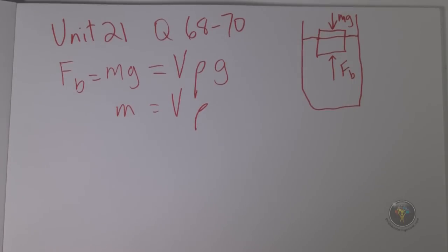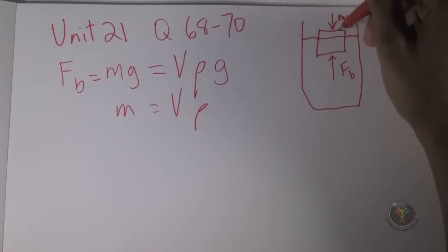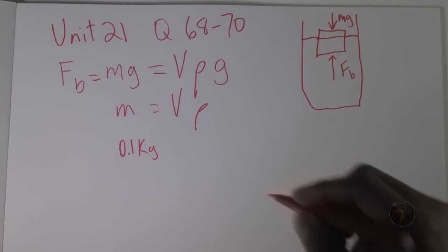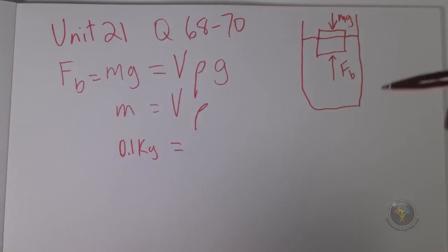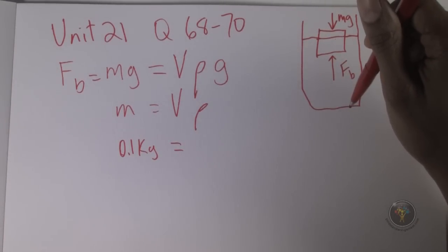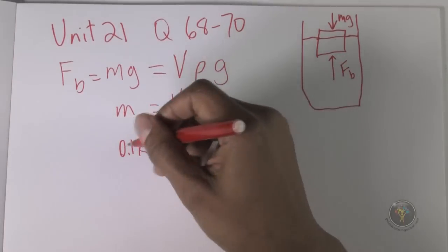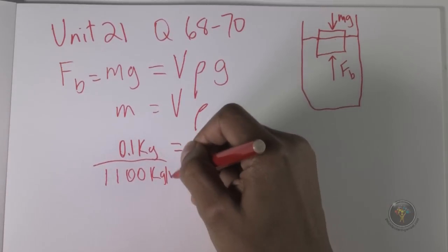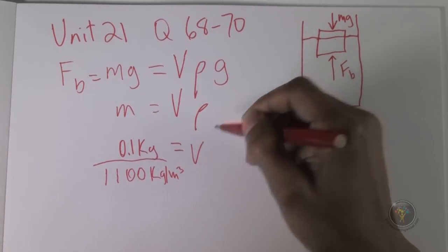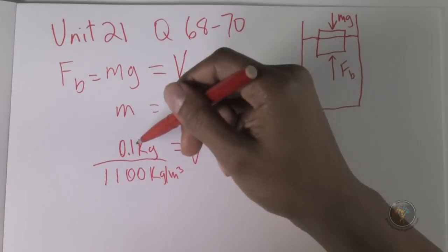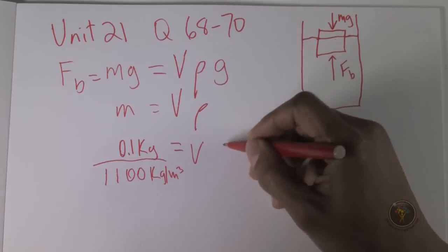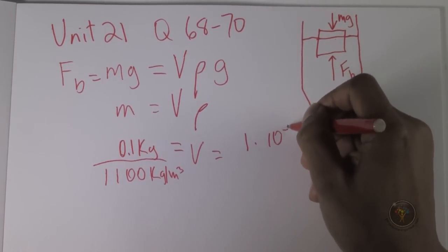The mass of this cube that was placed here is 100 grams, which is 0.1 kilograms. The density here of the fluid, the brine solution, is 1,100 kilograms per meter cubed. So I'm going to divide both sides by the density, 1,100 kilograms per meter cubed, and all of this is equal to the volume.